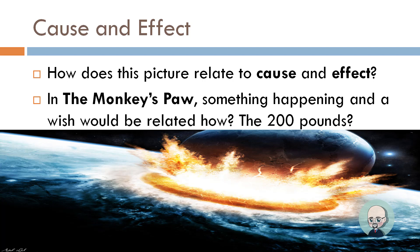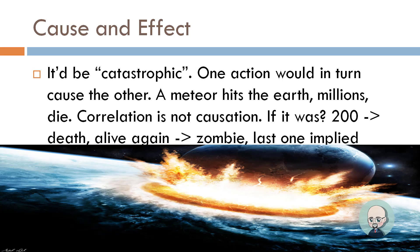This would be catastrophic — one action would cause the other. In this picture, a meteor hits the earth and millions of people die. That's bad. Or a moon is colliding with the earth — I think it's a meteor. So one event directly causes another.